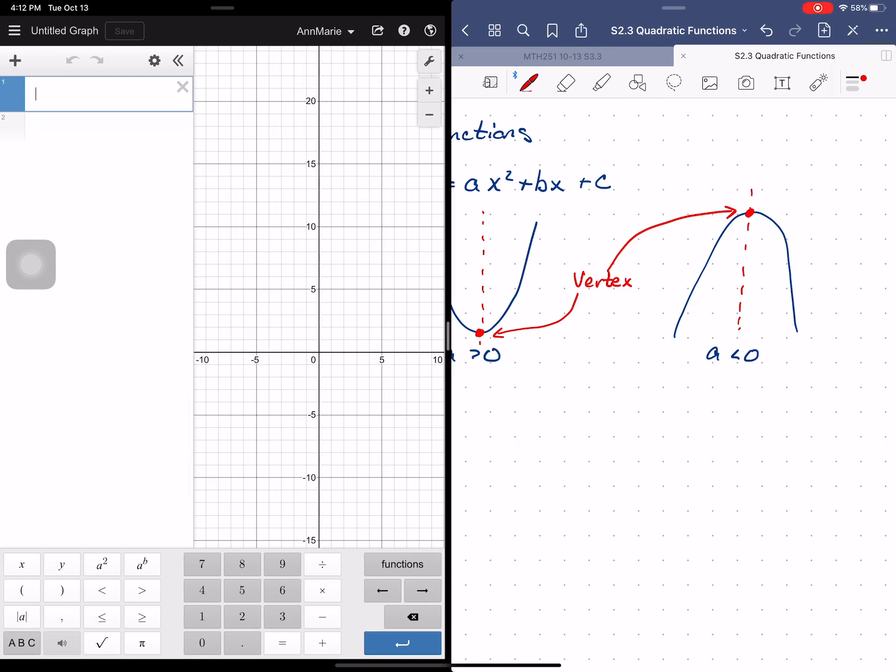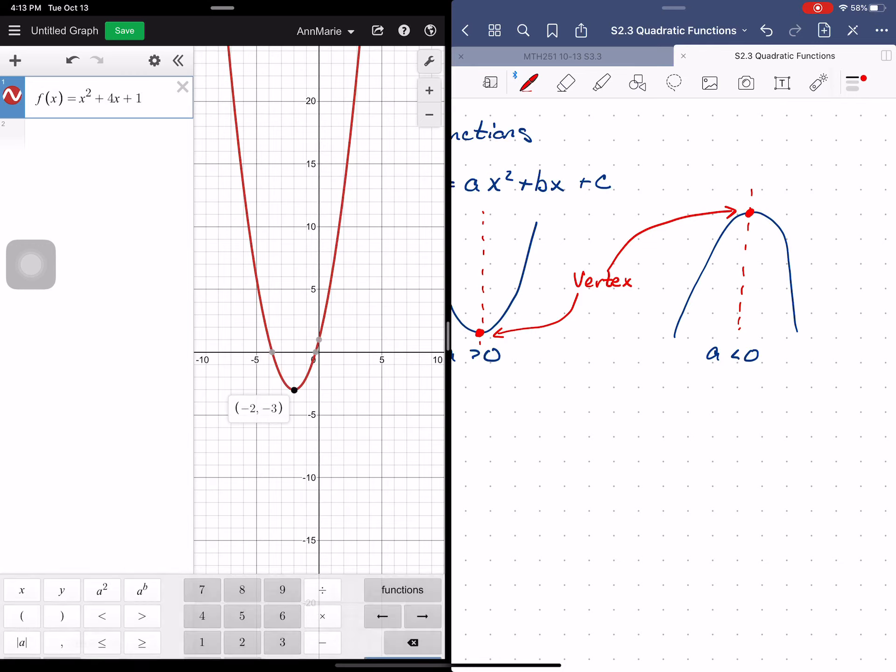Let's graph the parabola f(x) = x² + 4x + 1. We can see that the vertex here is at the point (-2, -3).